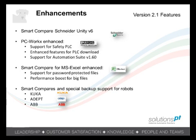Other enhancements include the addition of smart compare for Unity version 6, PCworks, an update to the Microsoft Excel smart compare, and additional compares for robots such as Cougar, ADEPT and ABB.